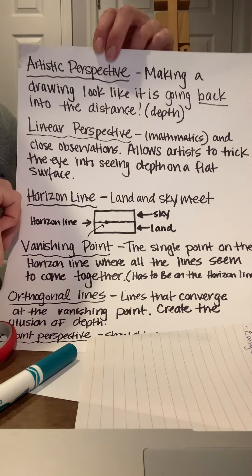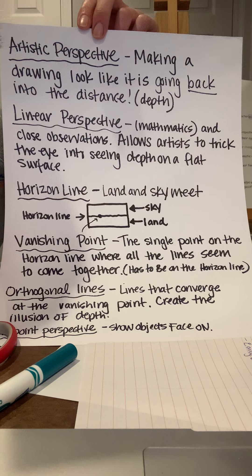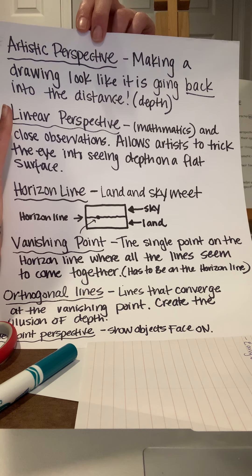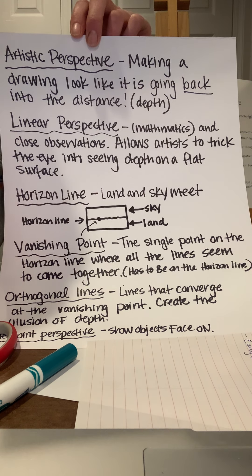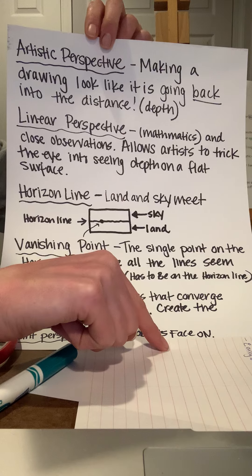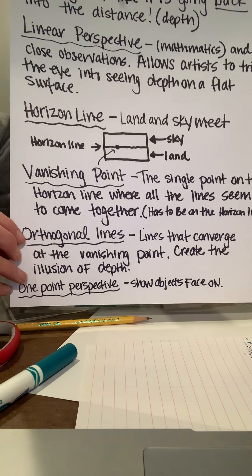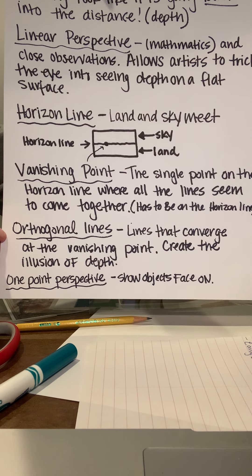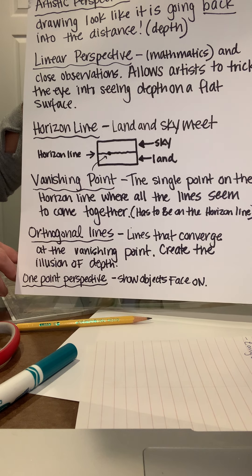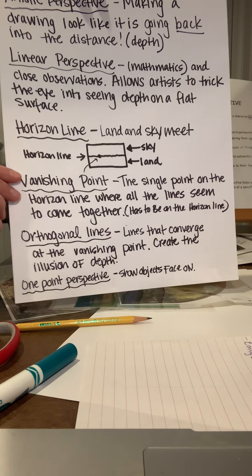To create one-point perspective, you need a vanishing point — this is where the focal point happens and where our eye is led into the distance. The vanishing point is the single point on the horizon line where all the lines seem to meet and come together. Then we have orthogonal lines — these are lines that converge at the vanishing point to create the illusion of depth. You are going to see these things come into action when we start our drawing.